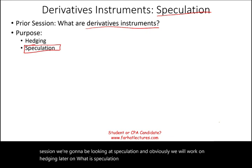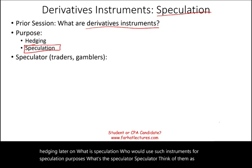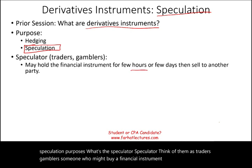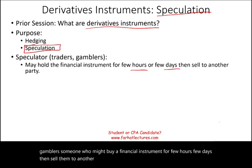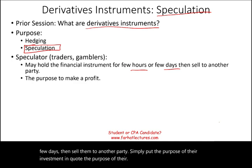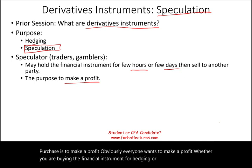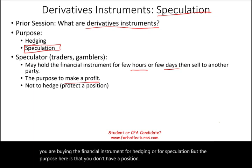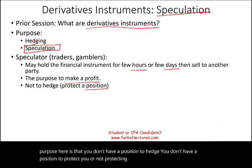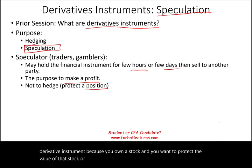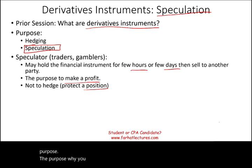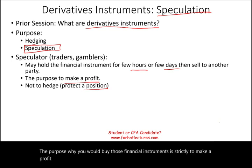What is speculation? Who would use such instruments for speculation purposes? A speculator — think of them as traders, gamblers — someone who might buy a financial instrument for a few hours or a few days, then sell it to another party. Simply put, the purpose of their purchase is to make a profit. Everyone wants to make a profit, whether buying for hedging or speculation. But the key point here is that you don't have a position to hedge or protect. You are not buying the derivative instrument because you own a stock and want to protect its value. Your purpose is strictly to make a profit from buying and selling, not to protect a position.